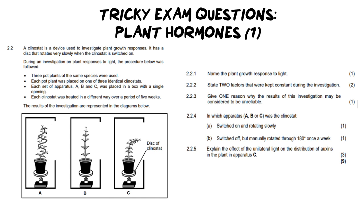Let's get into breaking down the question. We have a plant hormone question here and right off the bat, we need to pay attention from the moment we start reading the introductory sentence. It says a clinostat, which is a device used to investigate plant growth responses, and it is a disc that rotates very slowly when the clinostat is switched on. Now during an investigation on plant responses to light, so we now know that it's about phototropism.